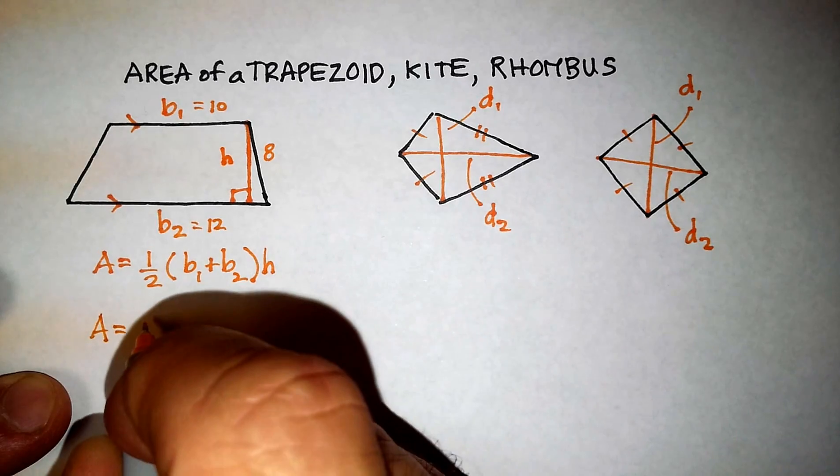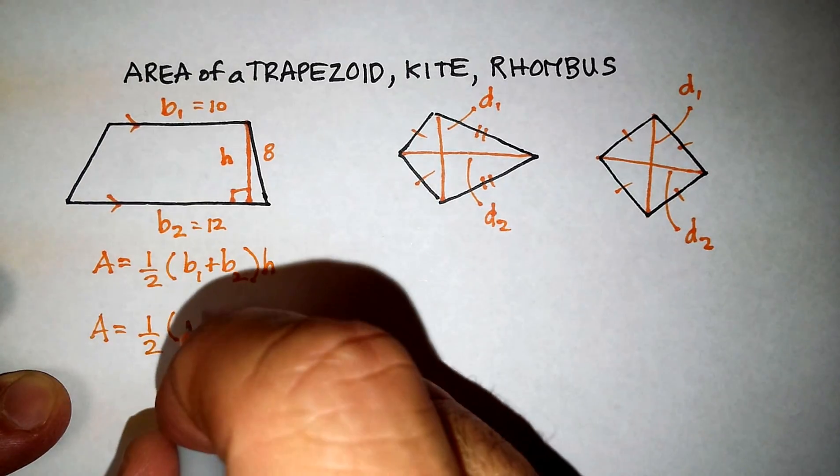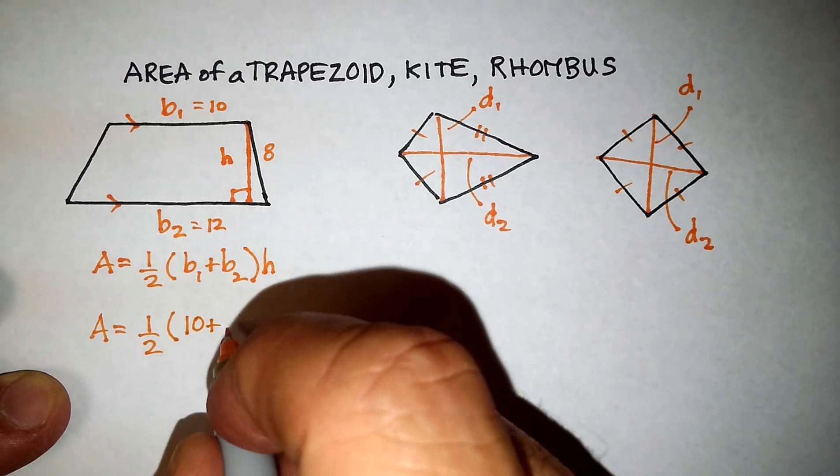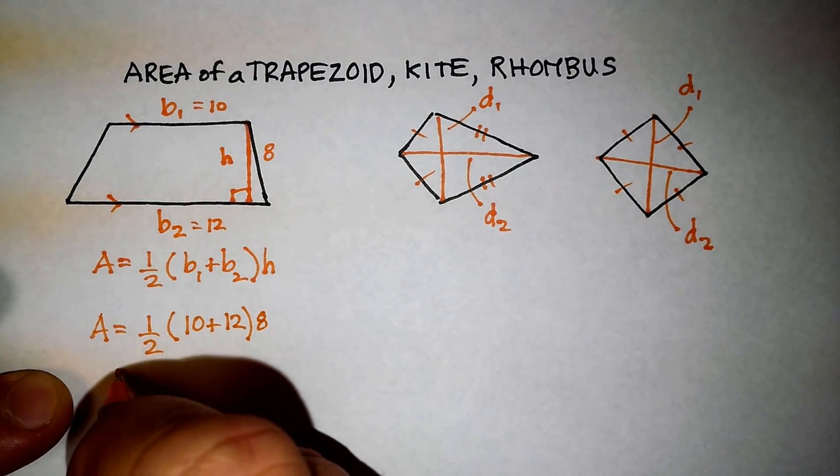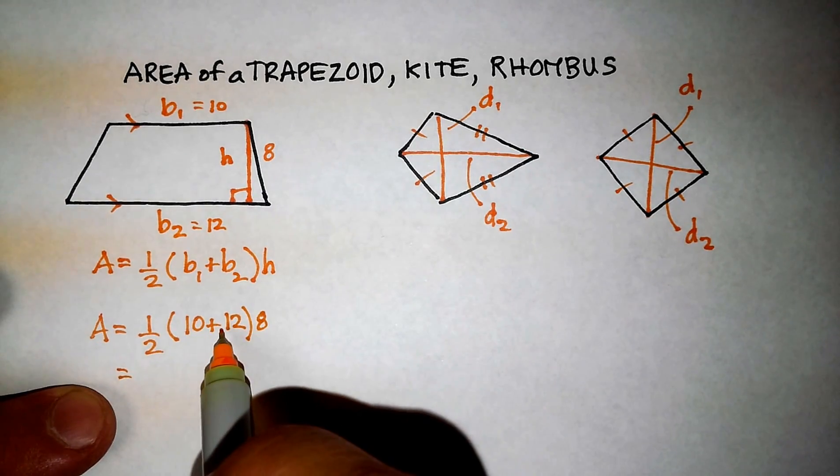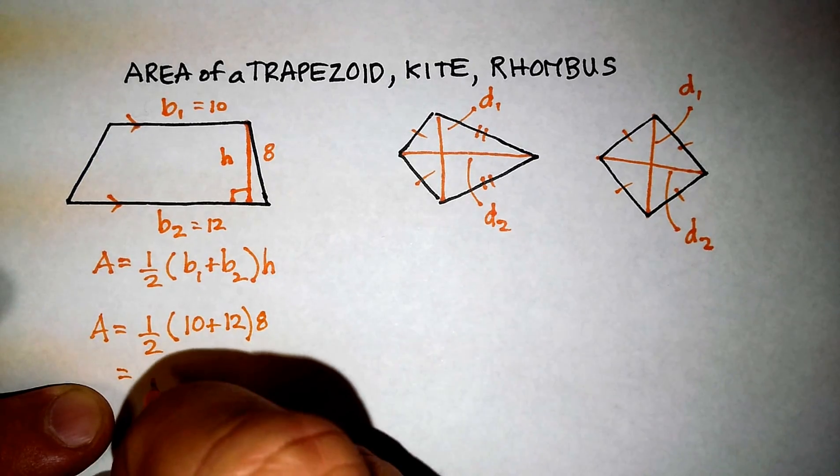So area is equal to 1 half base 1 is 10, base 2 is 12, times the height, which is 8. You're going to get 22, half of 22 is 11, 11 times 8 is 88.